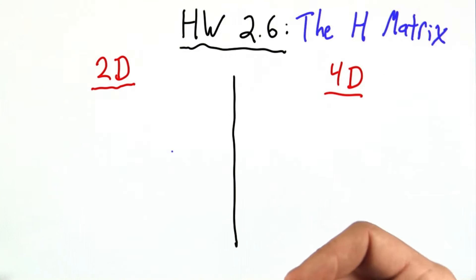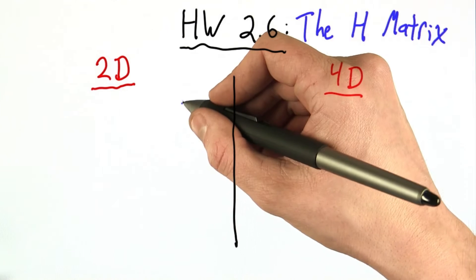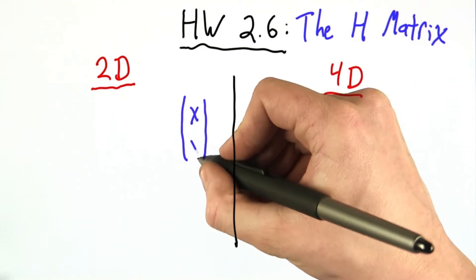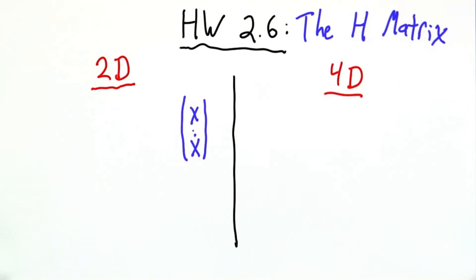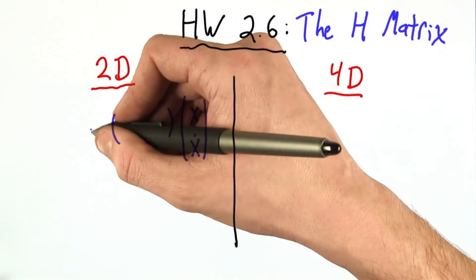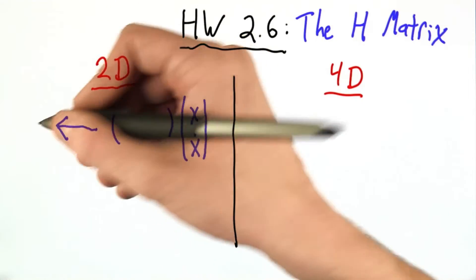Okay, so what was the goal of the H matrix? The goal of the H matrix was to take some state, and in the 2D case, our state was represented as an x and x dot, multiply some matrix by that state in such a way that we extract a measurement.